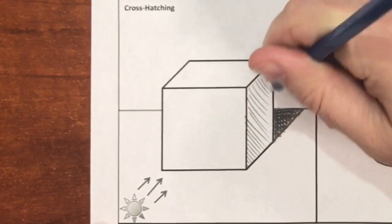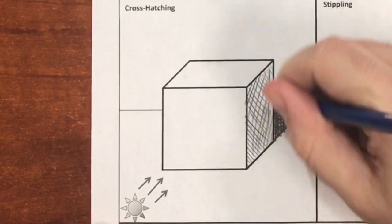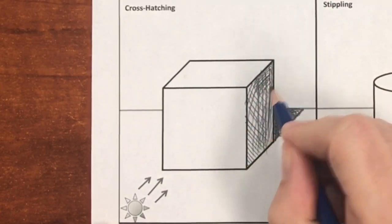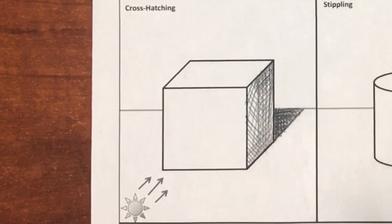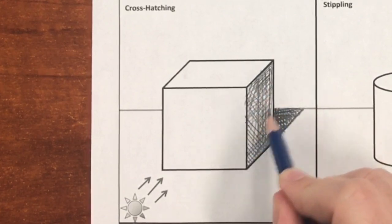And apply your hatching and cross hatching marks following the shape of the form or the direction that the side is traveling. Remember that we can do multiple layers going in different directions and take away certain directions or layers in order to make the tones appear lighter and lighter.